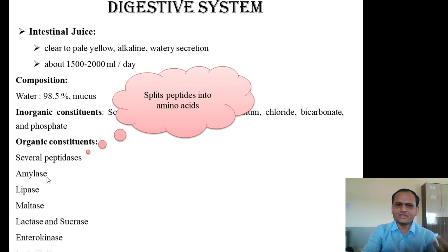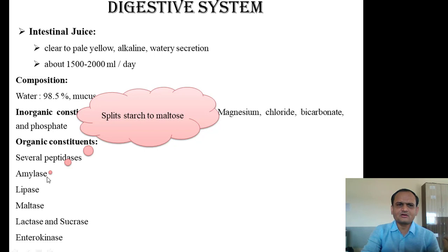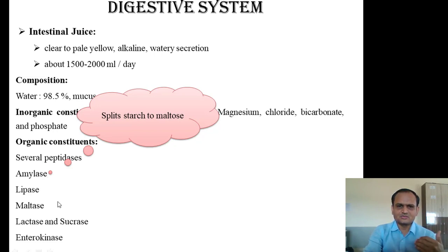Another enzyme is amylase — referred to as salivary amylase in the mouth, pancreatic amylase in the pancreas, and now as intestinal amylase. Regardless of the source, amylase carries out the same unique function: it splits starch into maltose, meaning the polysaccharide starch is broken down into the disaccharide maltose. However, the digestion of carbohydrates is not complete with amylase alone.